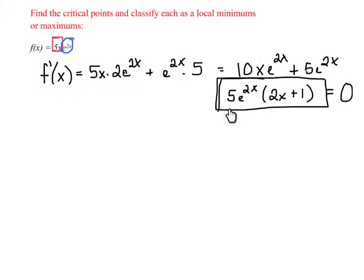Now, 5 e to the 2x, this will always be positive. In fact, I'm going to make a little note below here just with a plus. That will always be positive. We don't have to worry about that ever being 0. E to the 2x is greater than 0. So the only critical point will come from 2x plus 1. That will be 0 when x is negative 1 half. So that's our one and only critical point.